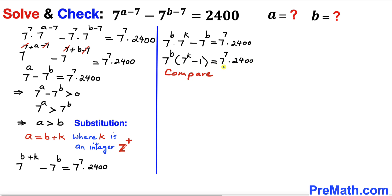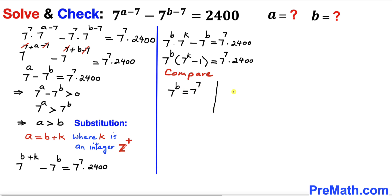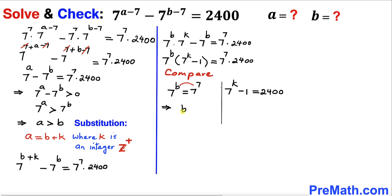Now let's compare both sides of this equation. We set 7 power b equal to 7 power 7, and the other part gives us 7 power k minus 1 equals 2400. Looking at the first equation, the bases on both sides are the same, so we can equate the exponents and conclude that b equals 7.